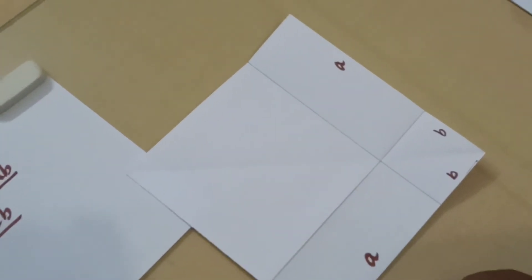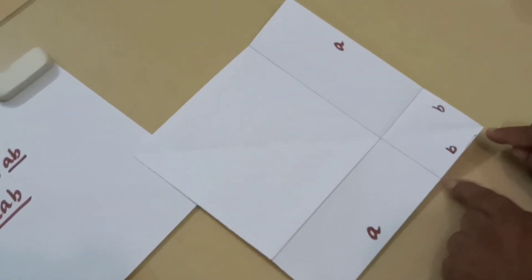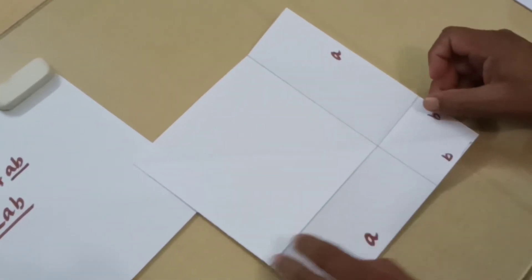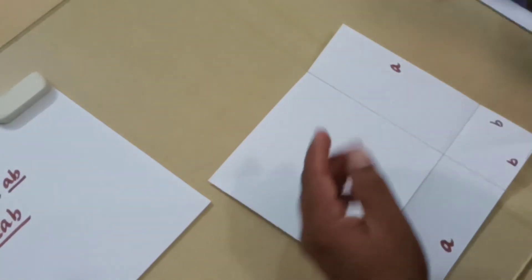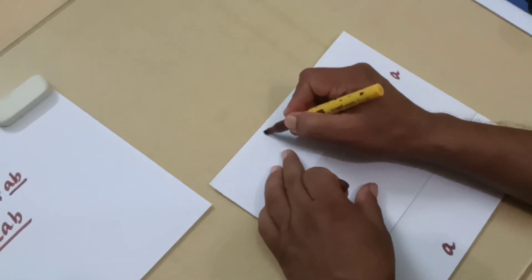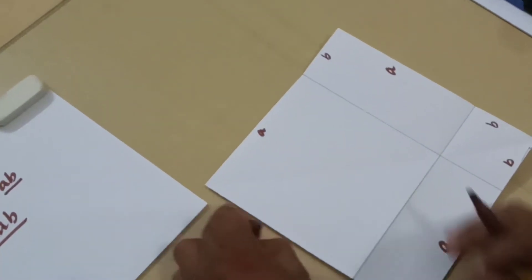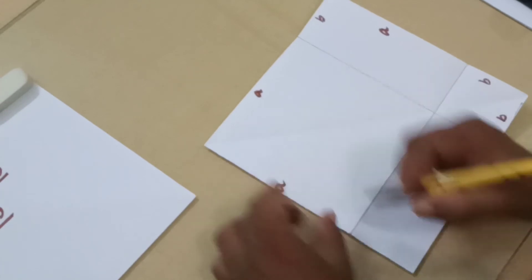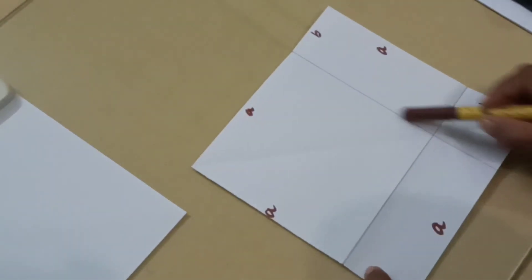So now we have divided this side into a and b. So similarly we have divided this side also into a and b. I will write it down for you. A and b. And even this side is divided into a and b. So I will write it down over here. A and b. Now let us look at the area of this square.